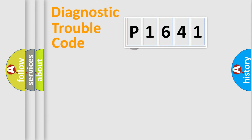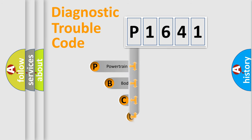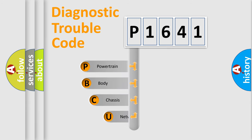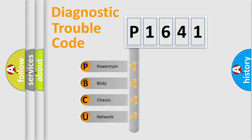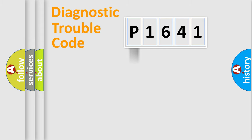Let's look at the history of diagnostic fault code composition according to the OBD2 protocol, which is unified for all automakers since 2000. We divide the electric system of an automobile into four basic units: Powertrain, Body, Chassis, and Network. This distribution is defined in the first character of the code.